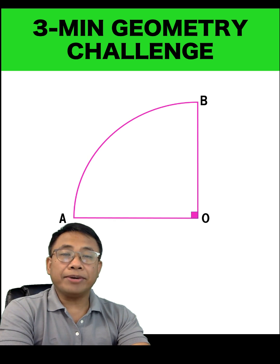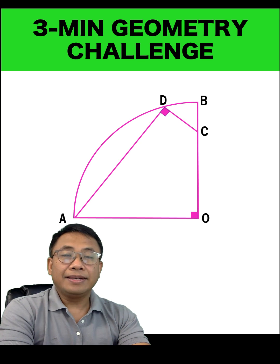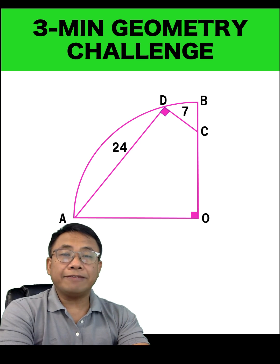Let's locate a point C on OB, and another point D on arc AB, and let's form this right angle CDA. The length of segment DC is given to be 7 units, and the length of segment AD is 24 units. We would like to find the measure of segment OC.